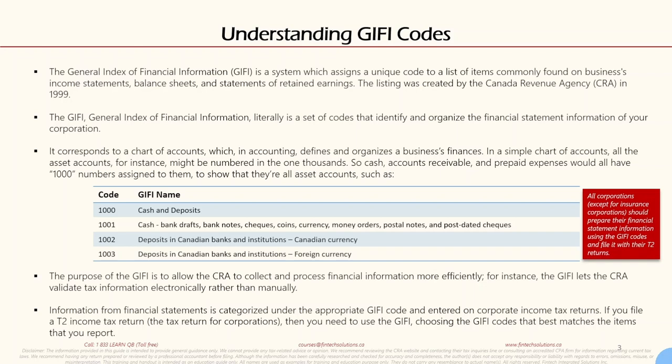GIFI corresponds to a chart of accounts, which in accounting defines and organizes a business's finances. In a chart of accounts, all the asset accounts might be numbered in the 1000s — so cash, accounts receivables, and prepaid expenses would all have 1000-series numbers assigned to them to show that they are all asset accounts.